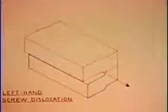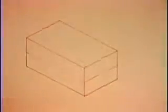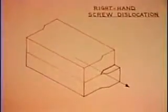The screw dislocation may have either a left hand or a right hand twist. The Burgers Vector of one is the negative of the other.